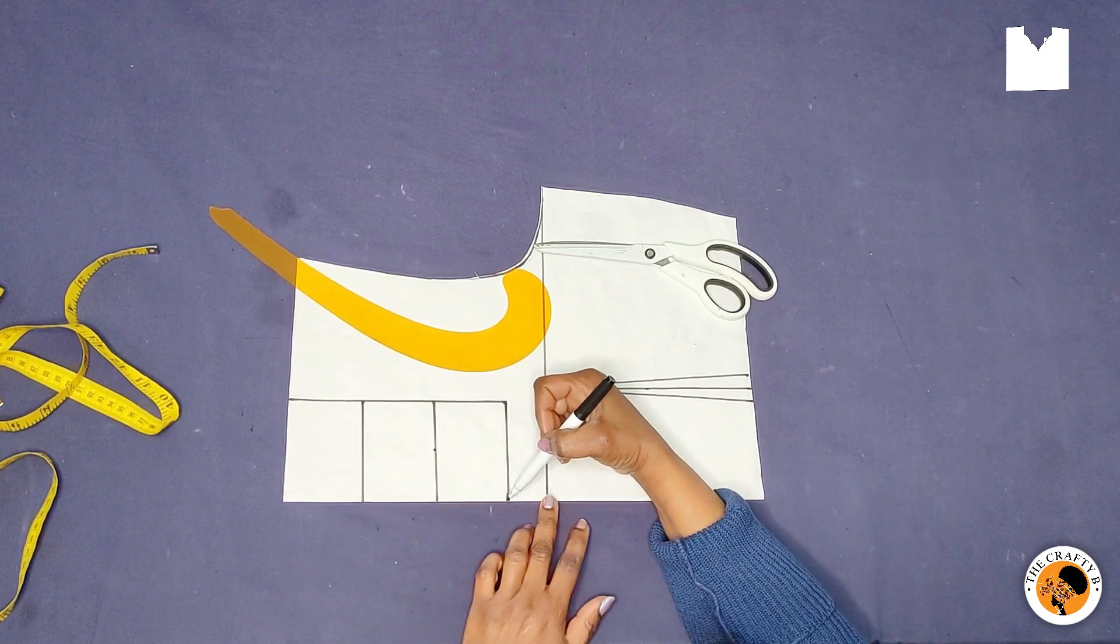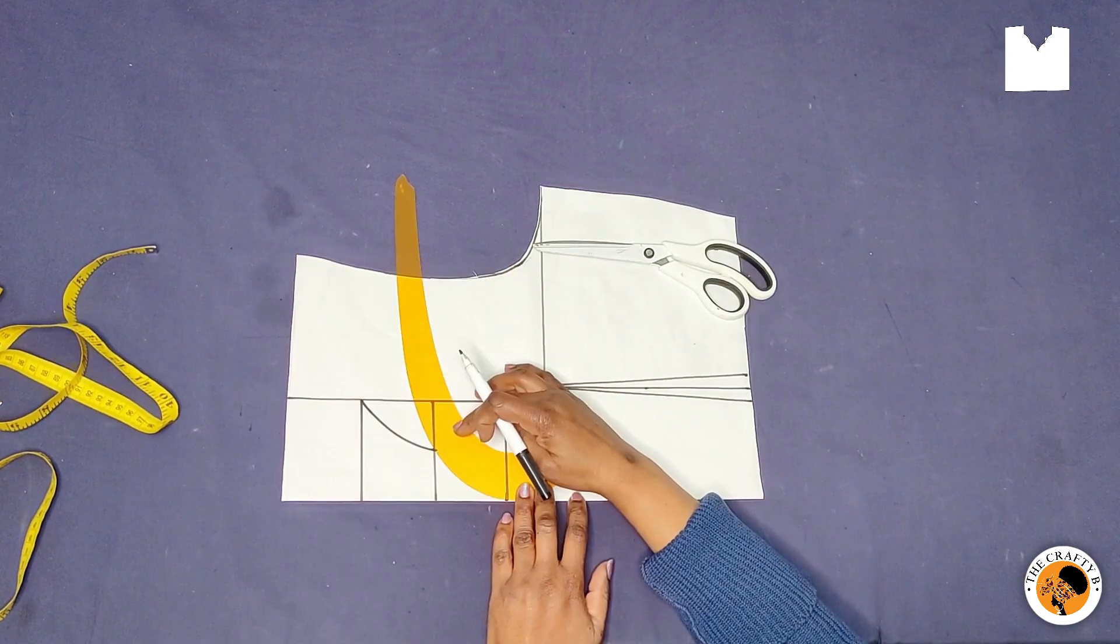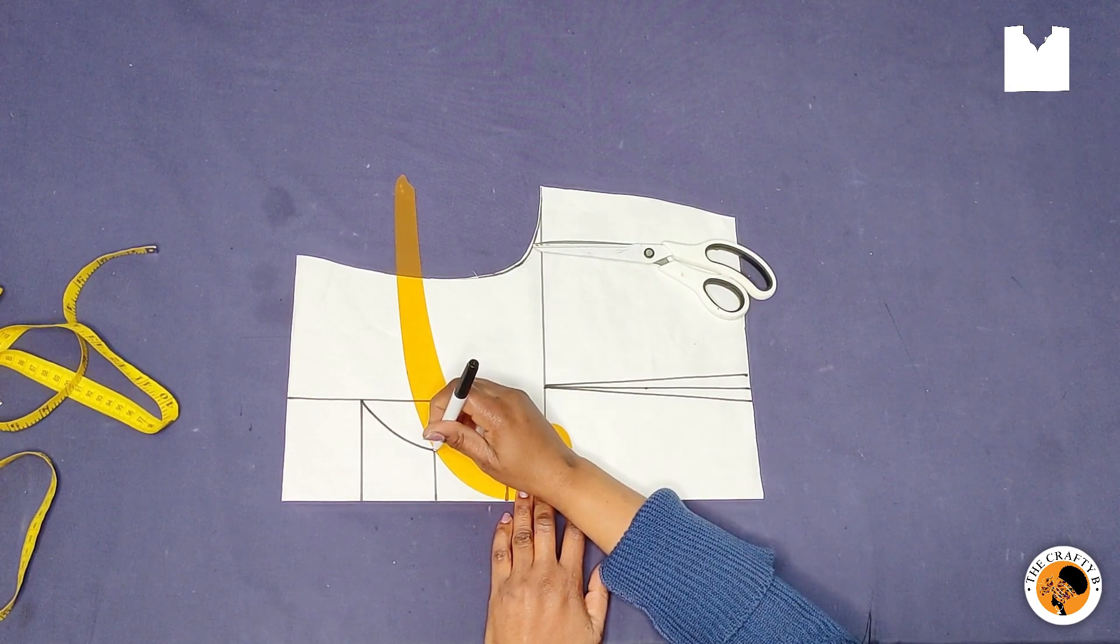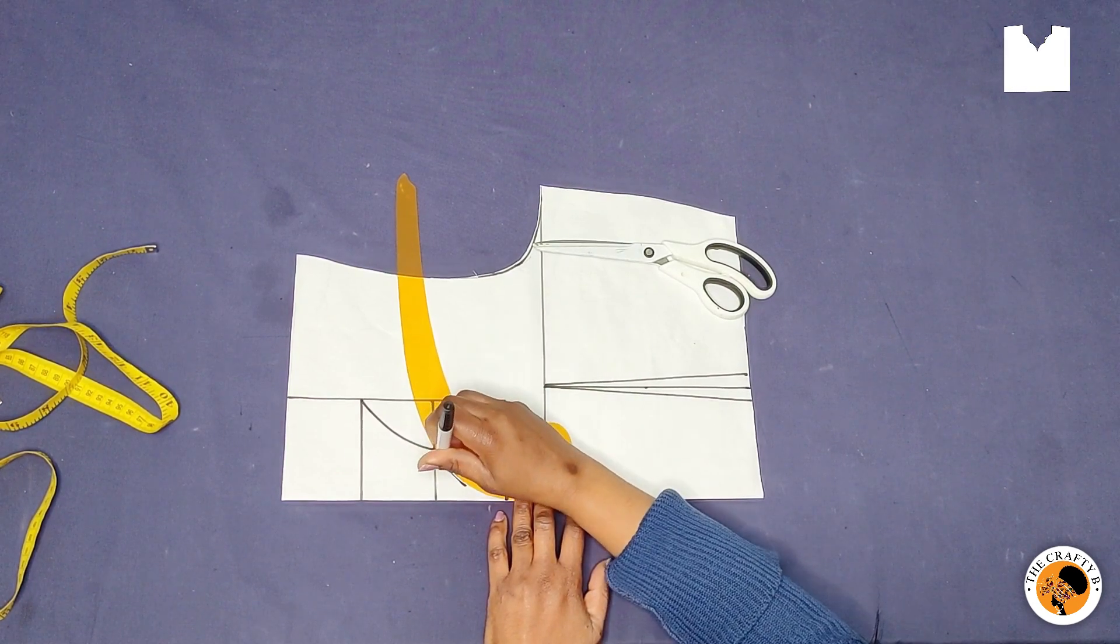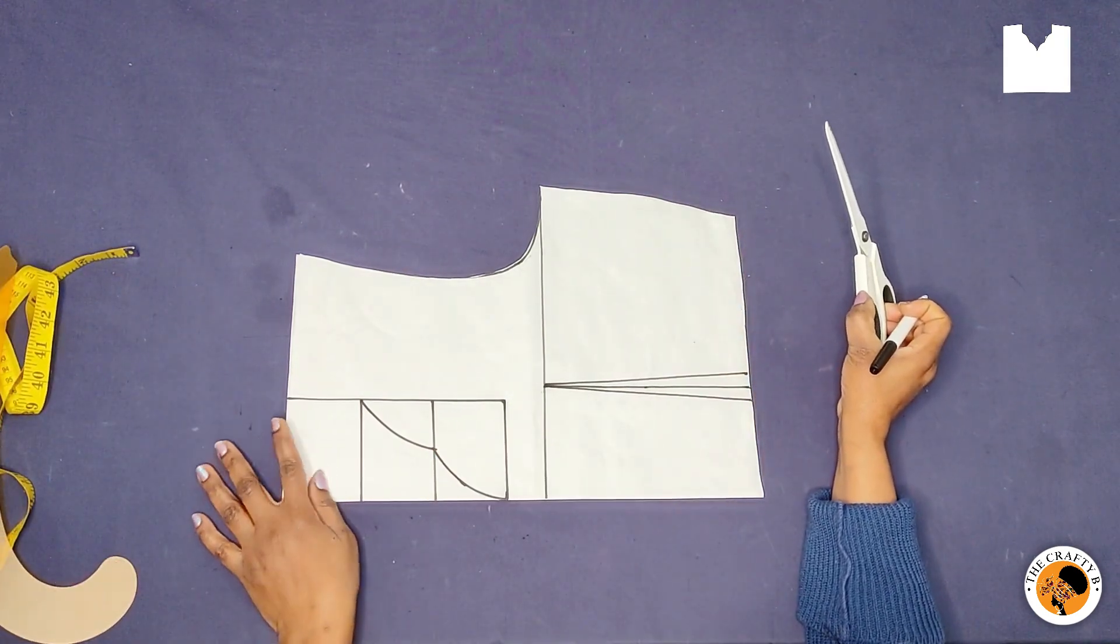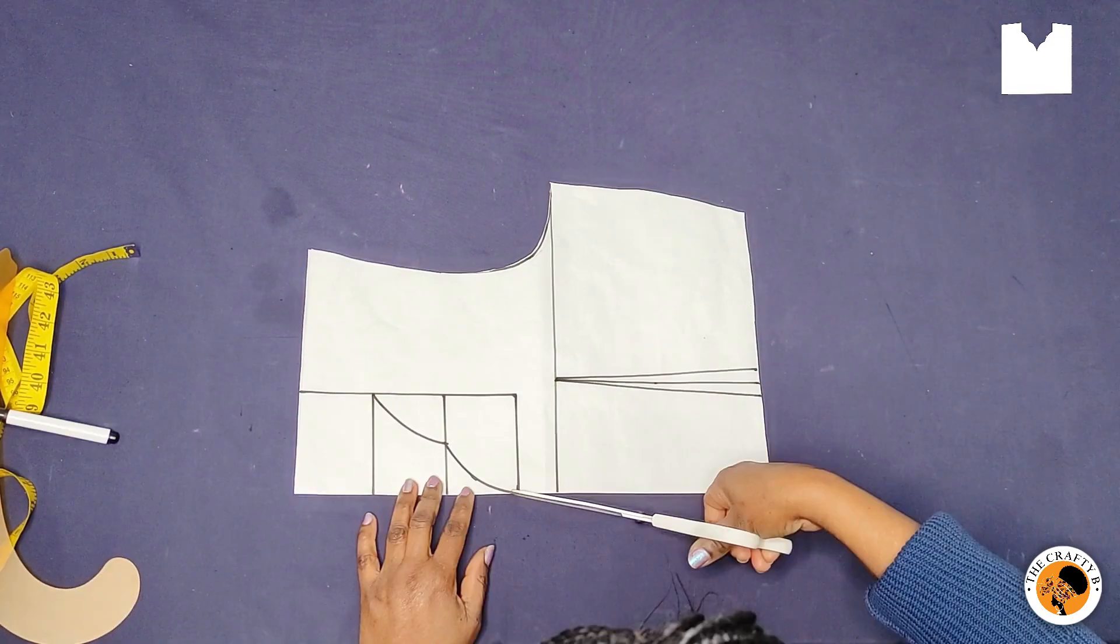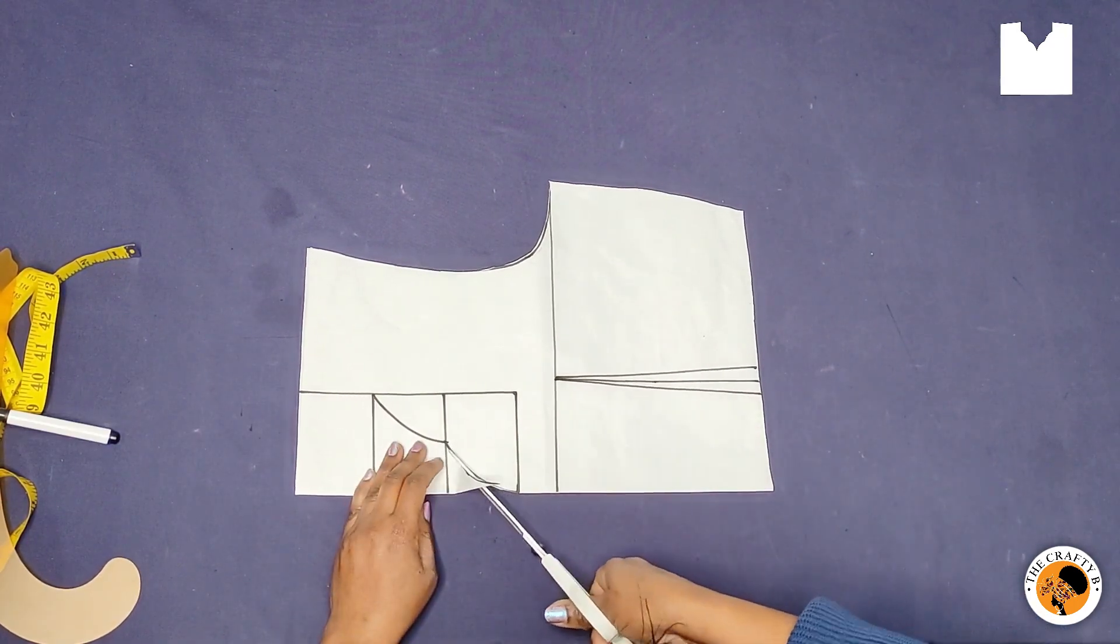So you see I place the ruler then you mark the line like so. So our scallop neckline is ready. So the next thing to do is to cut it out, just look at the way I'm cutting it. Voila, our scallop neckline is ready.